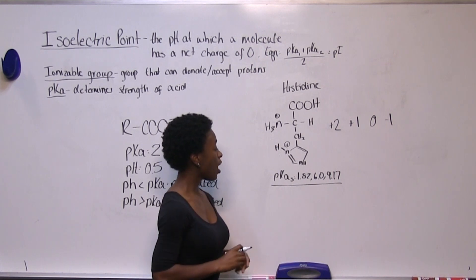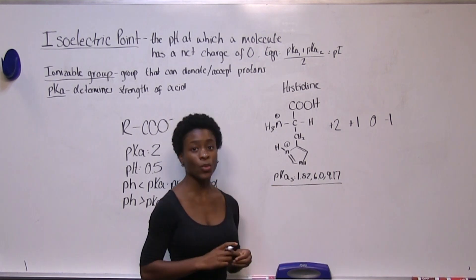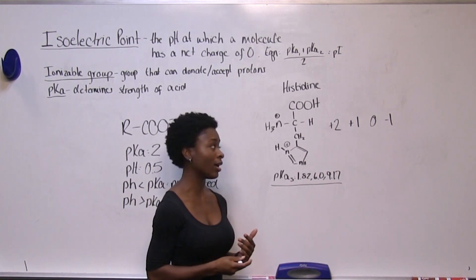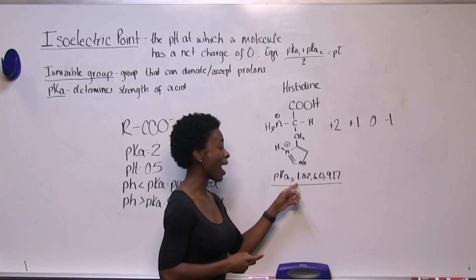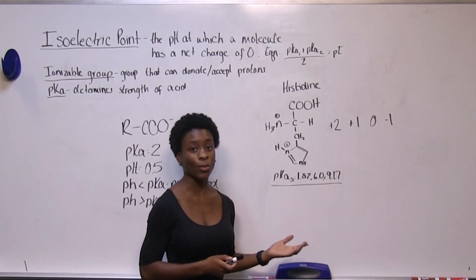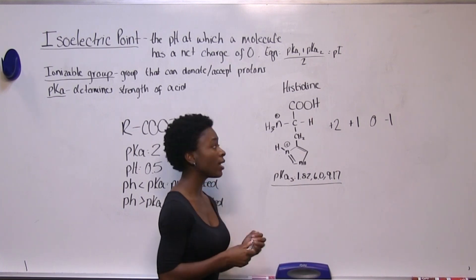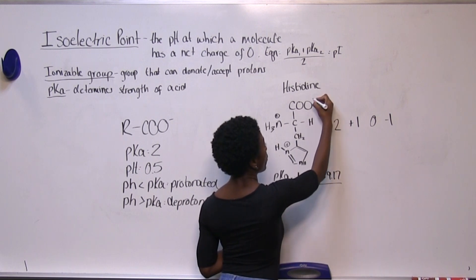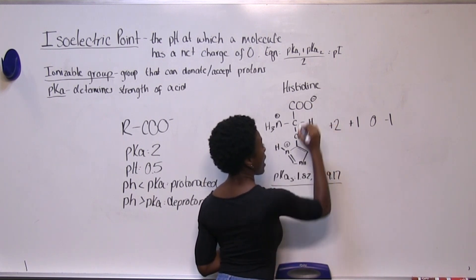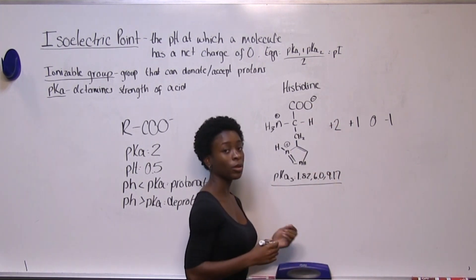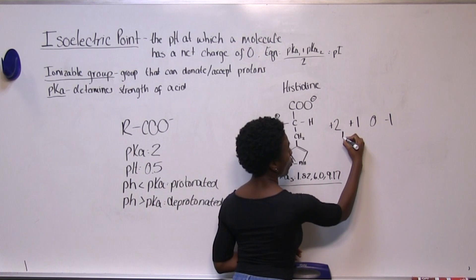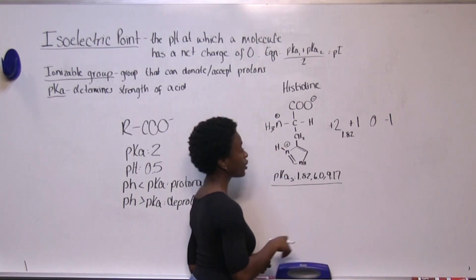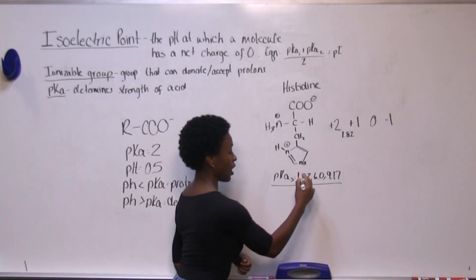Our first pKa value is 1.82. As we add hydroxide ions, the first pH we pass is 1.82. Once we pass it, the carboxyl group loses its proton and becomes negative, and now we'll be at a plus one charge. So we'll write 1.82 between the plus two and plus one charges.